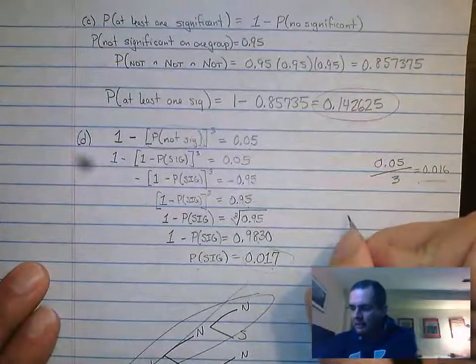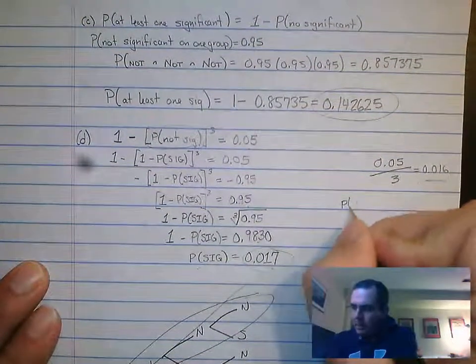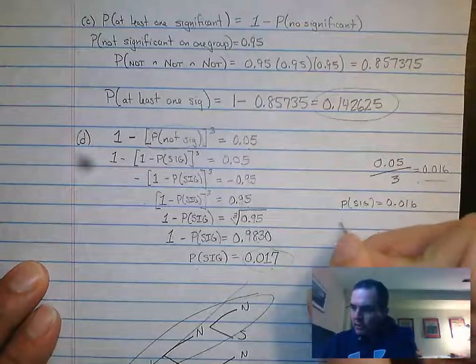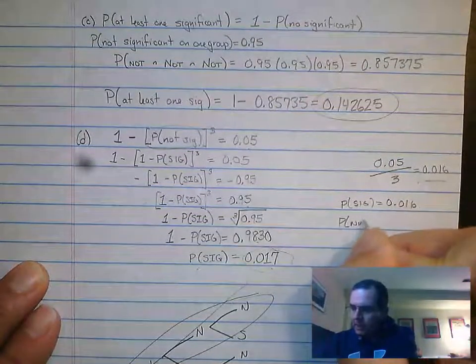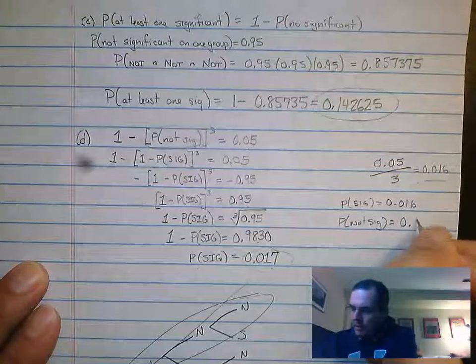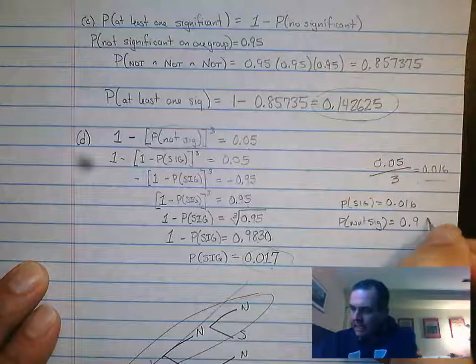What I basically do is I go ahead and say the probability of a significant result is 0.016, which means the probability of not a significant result would be 0.984.